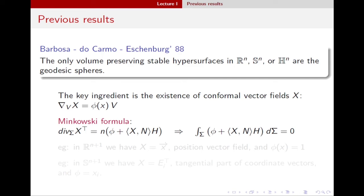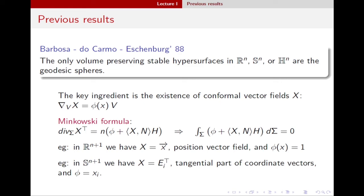The key idea in proving such results is the existence of conformal vector fields in these spaces. A conformal vector field satisfies the equation where its derivative in the direction of any vector field is a multiple of that vector field through some function phi(x). This is relevant because if you compute the divergence of the tangential part of this vector field over some surface sigma, you get a function depending on the mean curvature of the surface and the potential function phi from the conformal equation. Applying the divergence theorem gives the so-called Minkowski formula, which provides a natural test function for the stability inequality.